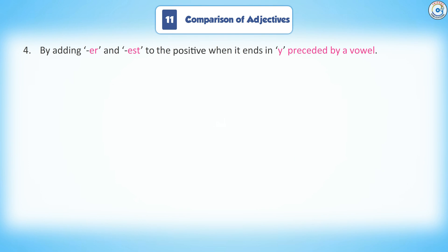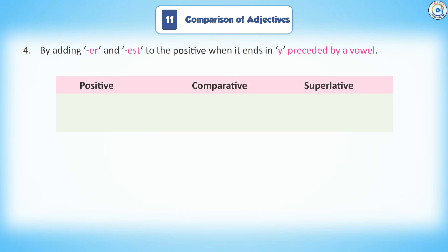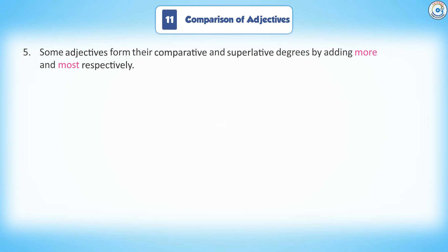Rule 4: By adding -ER and -EST to the positive when it ends in Y preceded by a vowel. Positive, comparative, superlative: Gay, gayer, gayest. Gray, grayer, grayest.